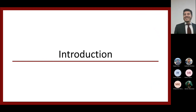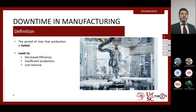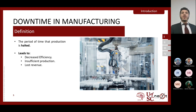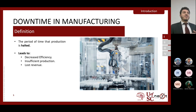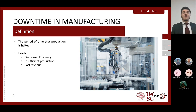Let's begin with a small introduction about manufacturing, specifically about downtime and how it affects facilities. Downtime is essentially the period of time where your production line is halted — all machines and equipment are paused and no products are being made. Downtime can lead to serious disadvantages in manufacturing facilities, including decreased efficiency, insufficient production, and of course lost revenue.